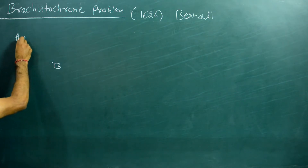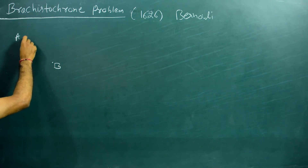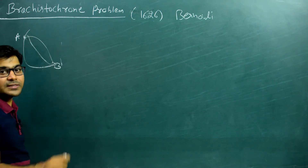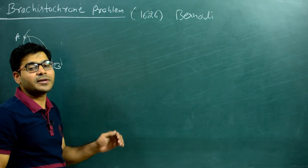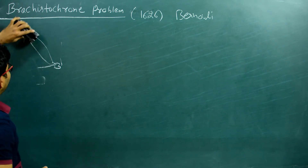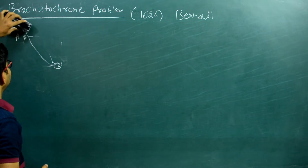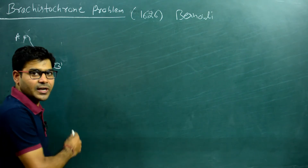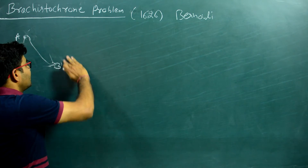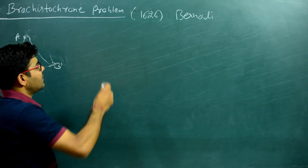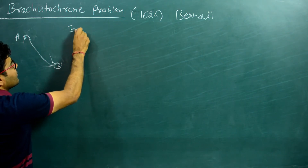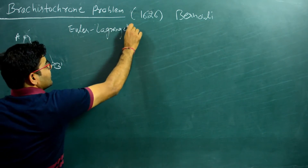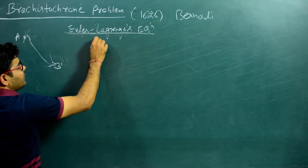Alternatively, this can be put forward in this fashion: suppose there are infinite number of paths possible in coming from A to B under the influence of gravity — which one is the path along which the time taken would be minimum? To solve this problem we will use the method of calculus of variation, which is a method used in calculus to solve such kinds of problems.